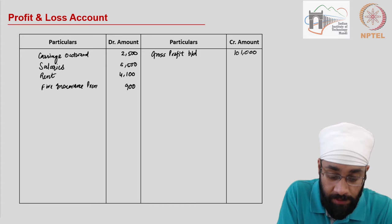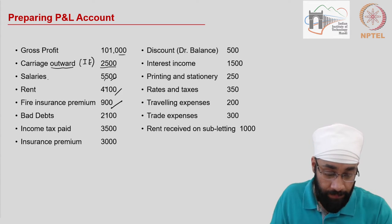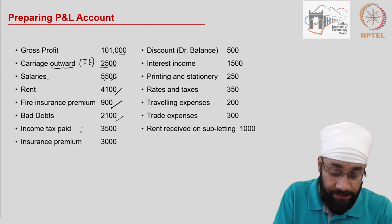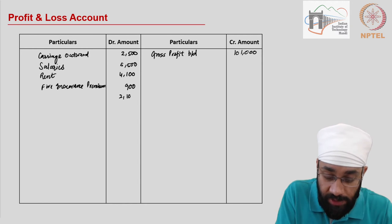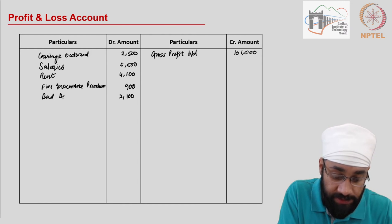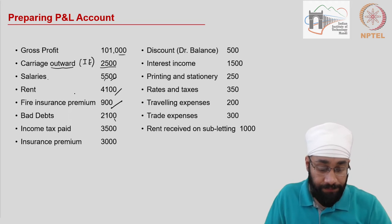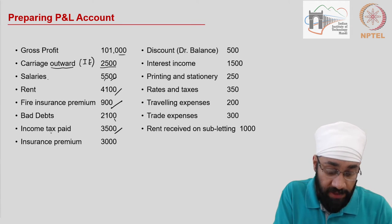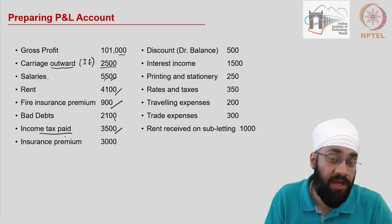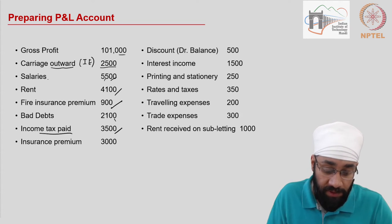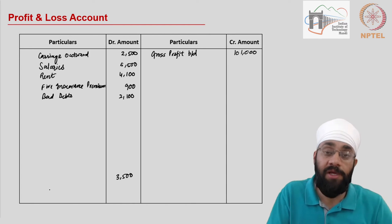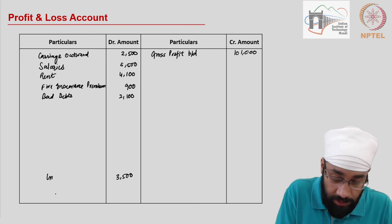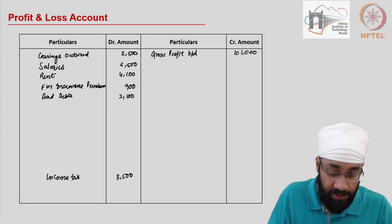Fire insurance premium is entered, then you have bad debts. Bad debt is a loss — we show this in the profit and loss account as well: two thousand one hundred. Bad debts. Income tax paid is three thousand five hundred. Income tax is a mandatory expense you pay on profit. Typically you write it at the bottom because it is calculated based on the profit earned during the year, but since we have been given this amount, we will write it at the bottom.